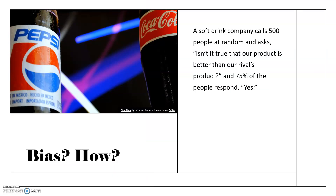A soft drink company calls 500 people at random and asks, 'Isn't it true that our product is better than our rival's product?' and 75% of the people responded yes. This is an example of how the question can introduce bias. The question is not generic like 'which do you prefer,' but instead implies the answer. So this is a biased sample — even though they called people randomly, asking questions in a slanted way will produce bias.